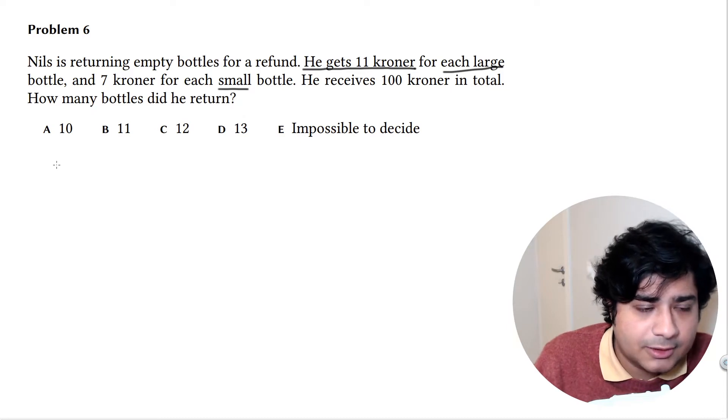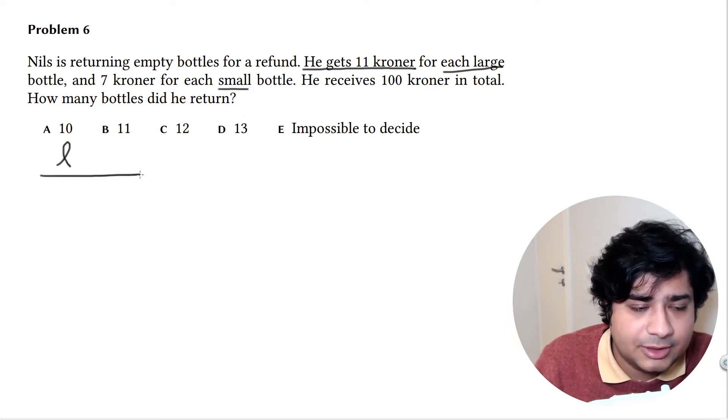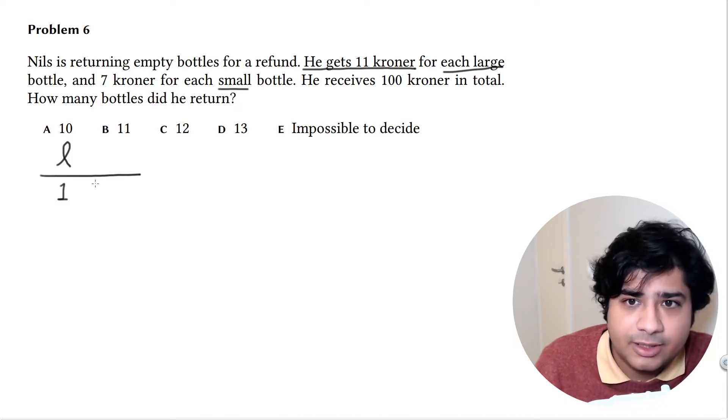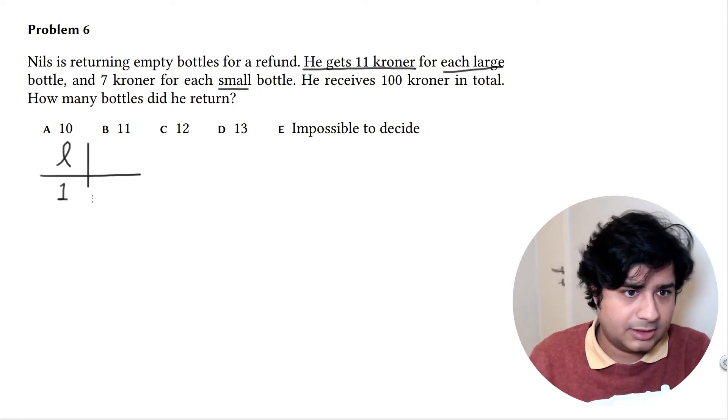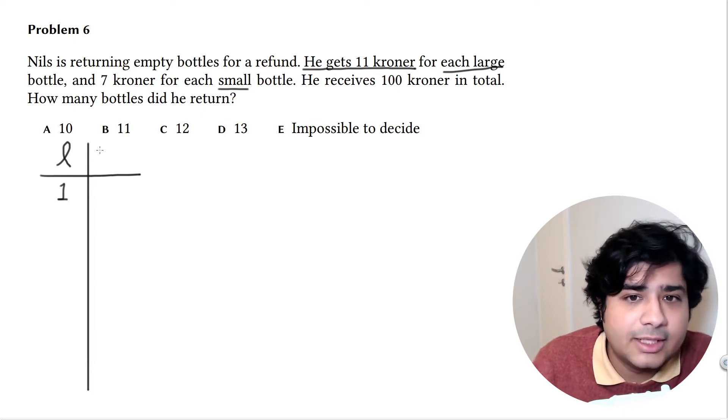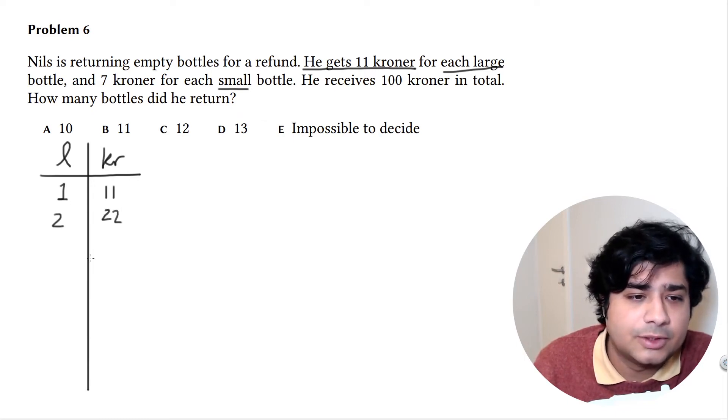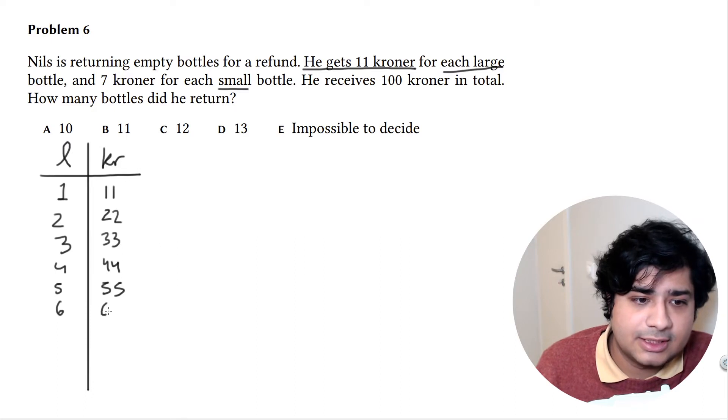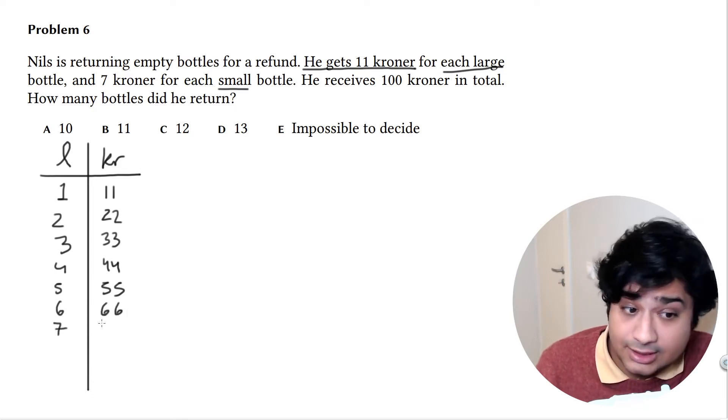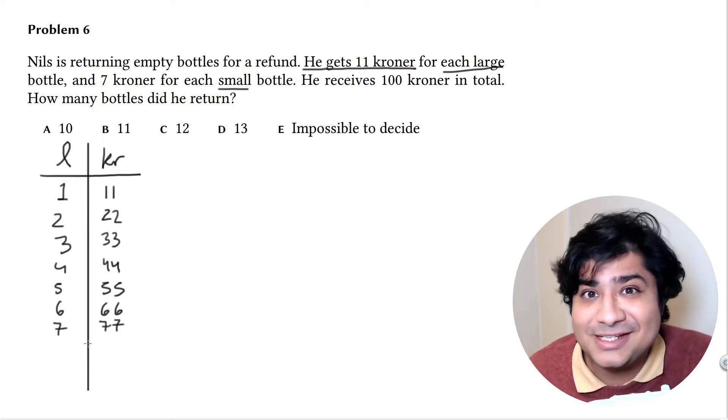If we had one large bottle, every large bottle gives you 11 kroner back, so that's 11. Two is 2 times 11, that's 22. You get the idea. Three is 33, four is 44, five is 55, six is 66, seven is 77. It happens to be pretty easy because it's 11.